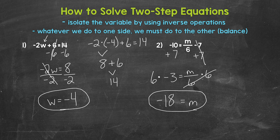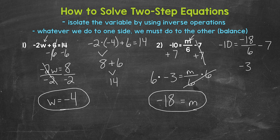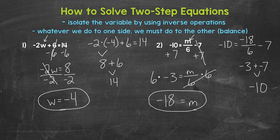Let's check it by plugging negative 18 in for m. We have negative 10 equals negative 18 divided by 6 minus 7. Starting with division: negative 18 divided by 6 — a negative divided by a positive equals a negative — gives us negative 3. Now we have negative 3 minus 7. We are starting at negative 3 and subtracting 7, so we are decreasing in value by 7, which gives us negative 10. Another way: we can add the opposite, so negative 3 plus negative 7 gives us negative 10 as well. So we are correct: m equals negative 18.